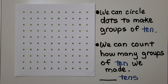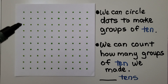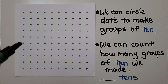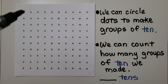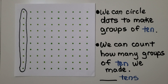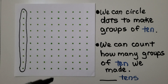We can circle dots to make groups of tens. We can count 1, 2, 3, 4, 5, 6, 7, 8, 9, 10 dots in this column. We can circle them. We've circled one group of 10. And we can circle more groups of 10.